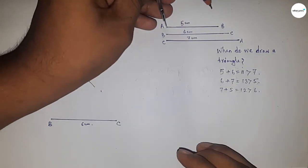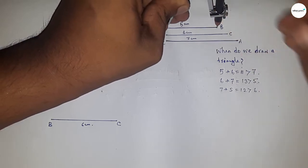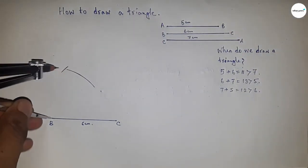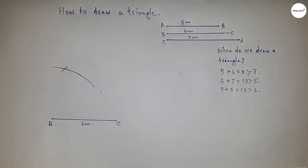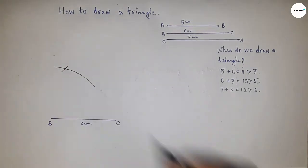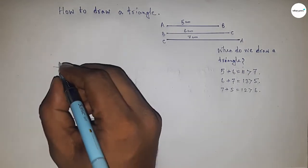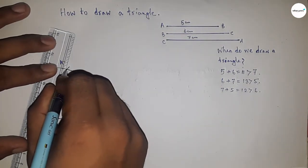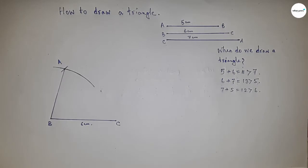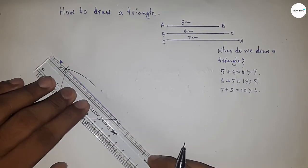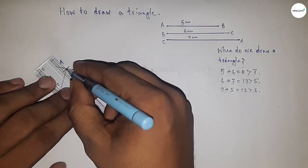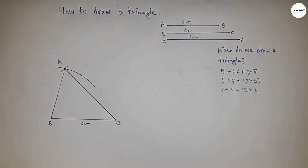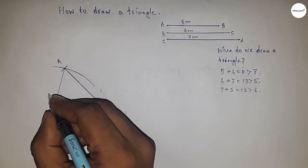Again, taking the length 5 centimeters and placing the compass here, I'll draw an arc. This is the intersecting point, which is point A. Now joining A and B, and joining A and C.